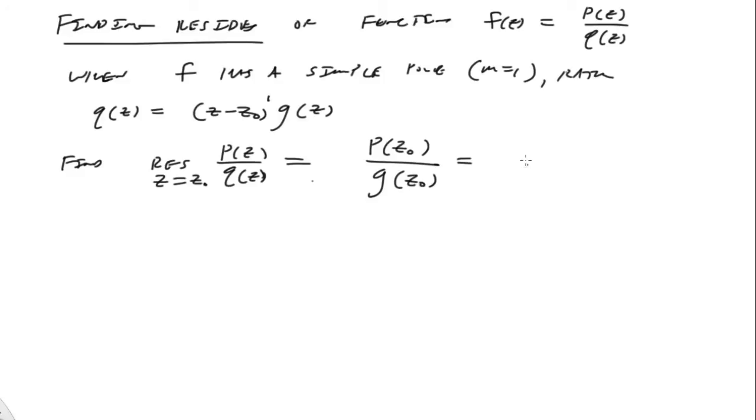We can also write this another way, and this is where it gets interesting, because this is where it becomes useful, that's p at z-naught over q prime at z-naught, right there.